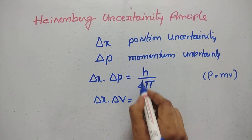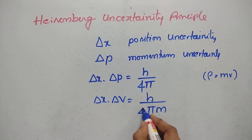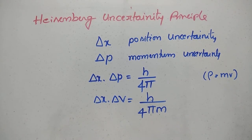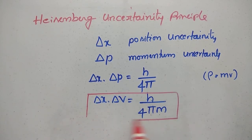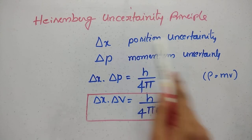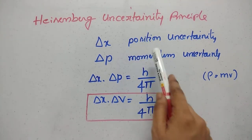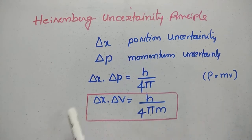Delta x into delta p is equal to h by 4 pi. Also, delta x into delta v is equal to h by 4 pi m. This is the Heisenberg uncertainty principle. If delta x is the position uncertainty of the electron and delta v is the momentum uncertainty of the electron, then their product will be h by 4 pi m.